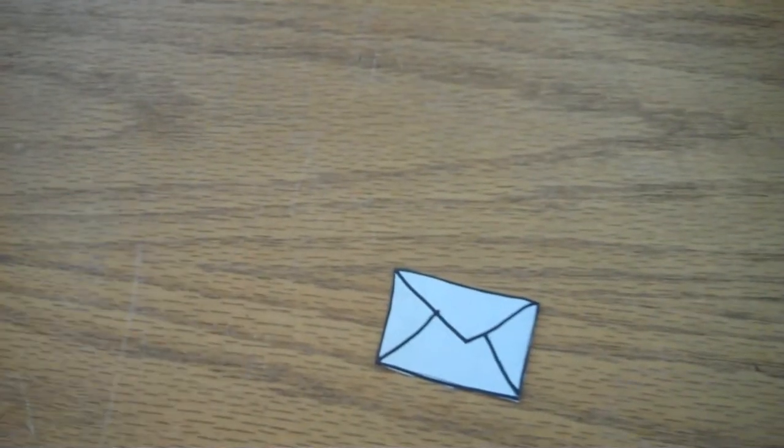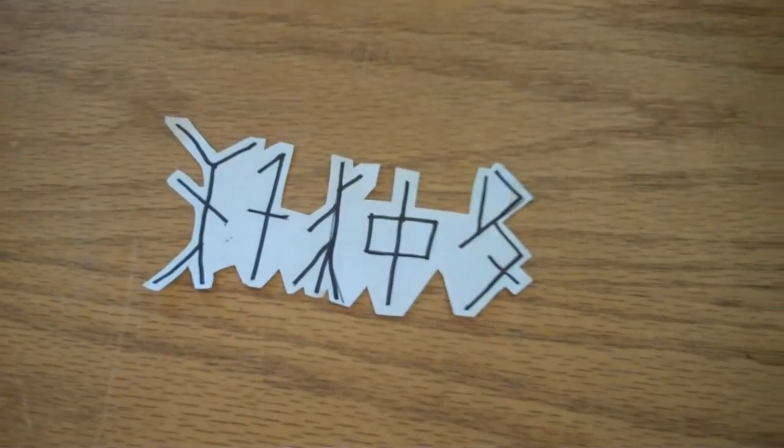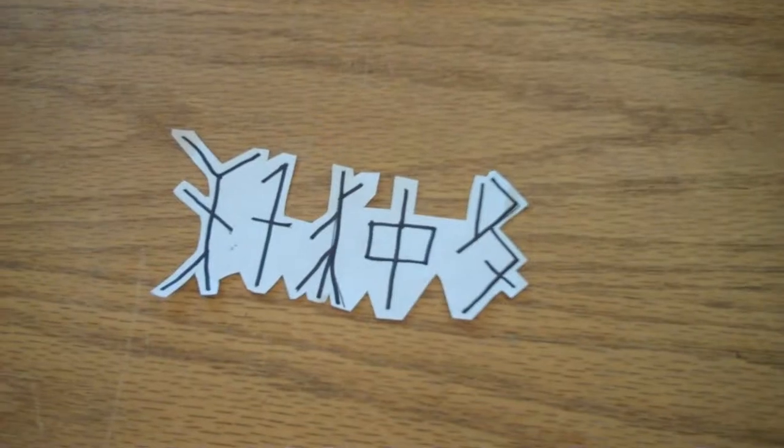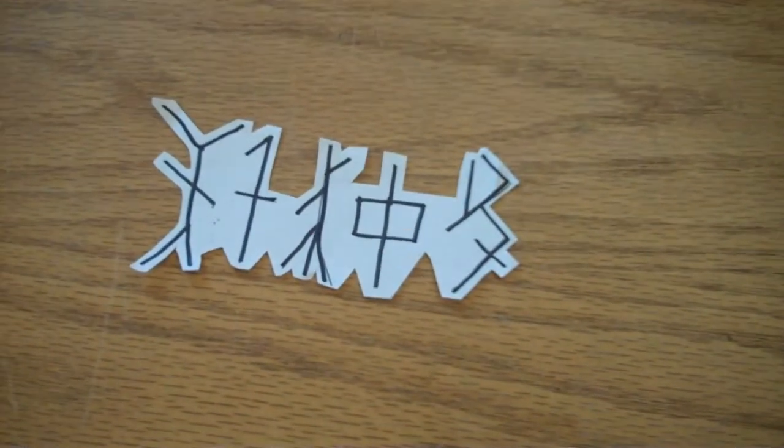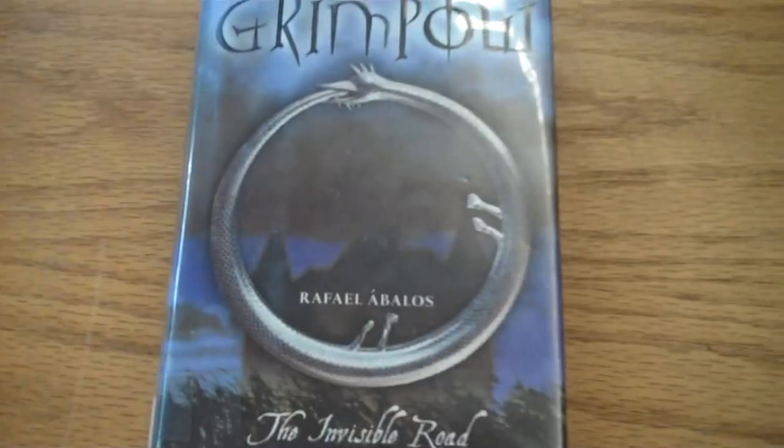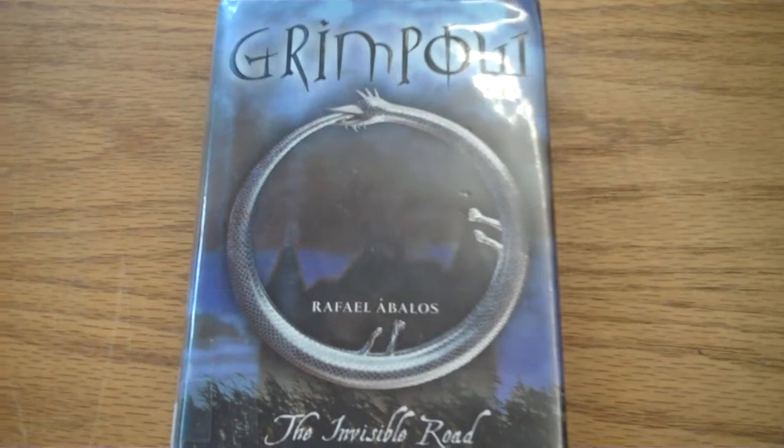You quickly slip the stone into your pocket and open the letter. It's in an unknown language, but somehow you can read it. As you read it, the man simply disappears into the snow. This is the stunning beginning of the story of Grimpow, The Invisible Road by Raphael Abalos.